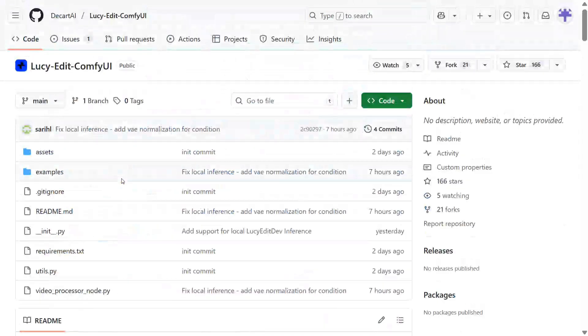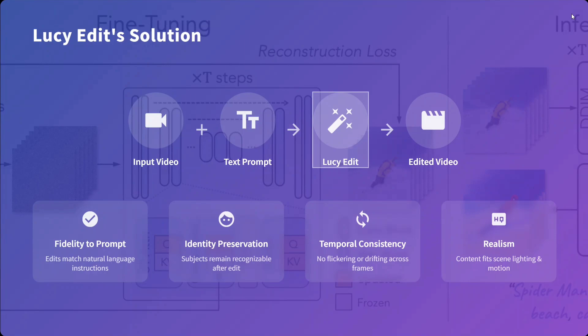I will be sharing the platform link where I was testing the model for free. Now let's jump into the details of the model. LucyEdit solution: you input a video and a text prompt, LucyEdit processes it, and you get an edited video. Key properties include fidelity to prompt — edits match natural language instructions; identity preservation — subjects remain recognizable after editing; temporal consistency — no flickering or drifting across frames, which we observed in most of the videos; and realism — content fits scenes with correct lighting and motion.